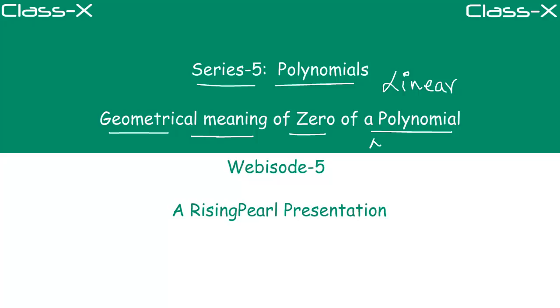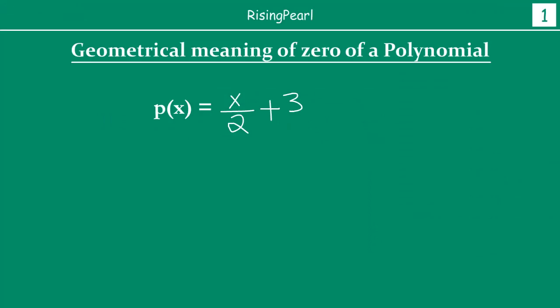That means no matter what linear polynomial you take, if you draw the graph of it, you will get a straight line. So today in webisode 5, we are going to focus on the geometrical meaning of the zero of the linear polynomial. Like we did last time, we are going to do this in the context of some examples — one or two examples — and then find out what is the zero of a linear polynomial.